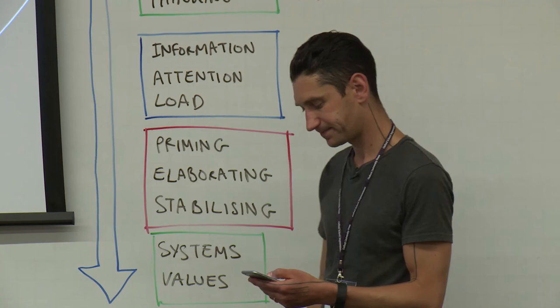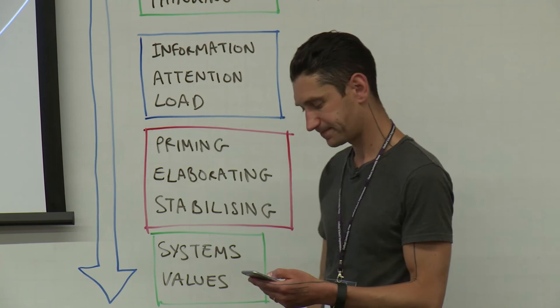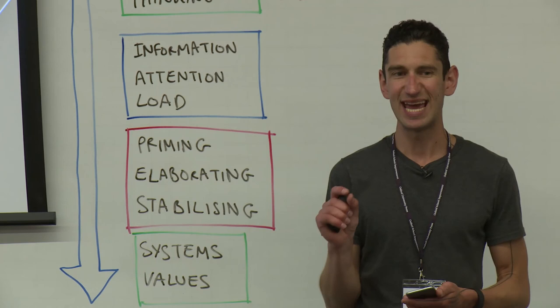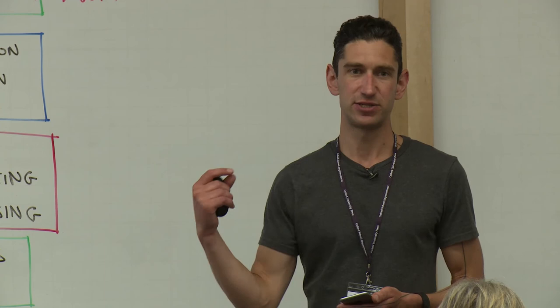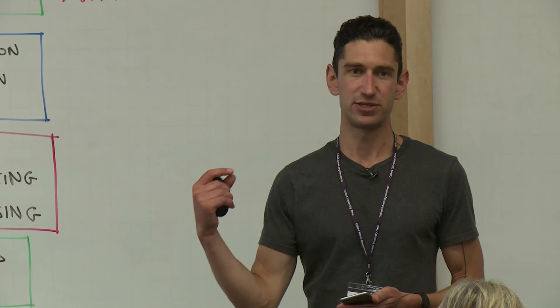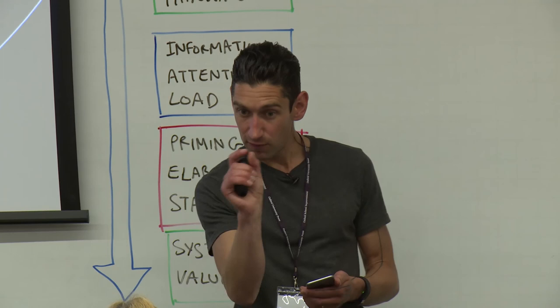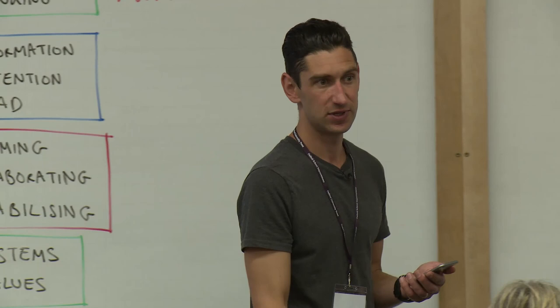I think there's something in here as well about helping our students get better at managing their own attention, and being more aware of that. And people like John Mason have done a lot of great work around the practice of noticing, and encouraging and helping our students to become better at noticing. Noticing features, looking for things, looking for particular features on objects, objects of learning. And so I think it's not only your responsibility as a teacher to manage their attention, but to help your students get better at managing and orienting their own attention.